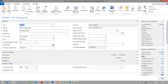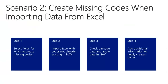So this is the result of mapping old values to new values before you import data from Excel in NAV. In the second scenario, I will use the function to create missing codes when importing data from Excel. I will do this by first selecting fields for which to create missing codes, then importing from Excel with codes not already existing in NAV, checking the package and applied data in NAV, and finally adding additional information to the newly created codes.